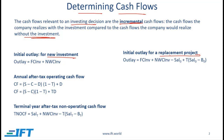With either of these, we have three types of cash flows: the initial outlay, then the annual after-tax operating cash flows, and then the terminal year after-tax non-operating cash flow.